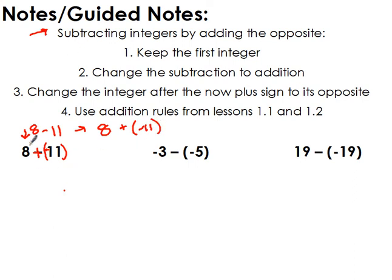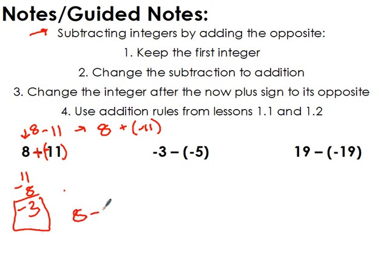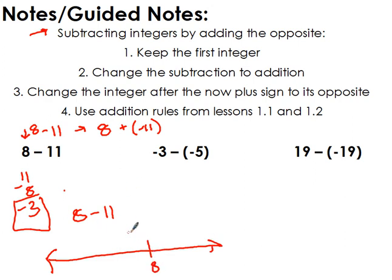Now I can use my rules of addition. Are they the same sign or different signs? I have different signs, so I subtract the numbers and keep the sign of the bigger number — my answer is negative 3. That also makes sense on the number line: starting at 8 and subtracting 11 means moving left 11 times — going left to 0 is 8 steps, then 3 more gets me to negative 3.